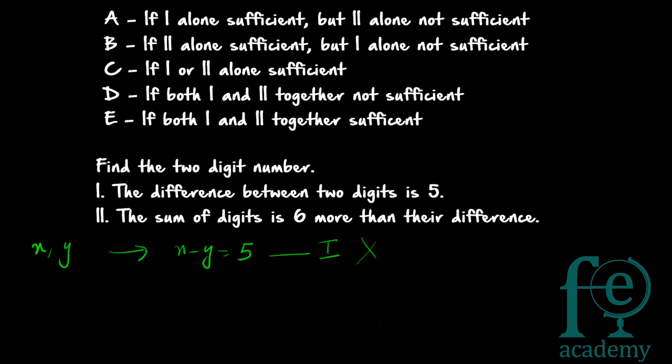Now for statement two, we transform it into an equation. The sum of digits is 6 more than their difference, which means x plus y equals x minus y plus 6. Using this equation alone, x and x cancel, giving 2y equals 6, so we can find y. However, we cannot obtain x from statement two alone, so statement two alone is also not sufficient to answer the question.